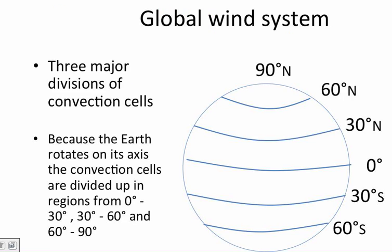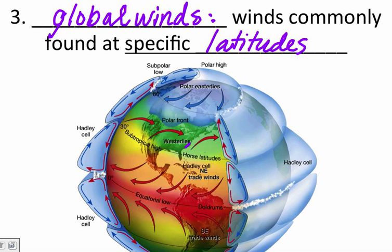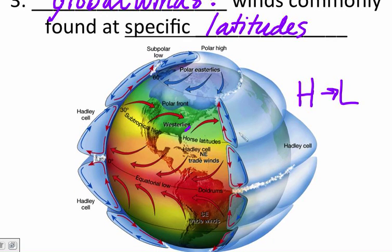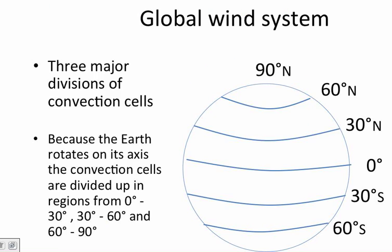We're going to look at three major divisions of convection cells. The Earth is made up of all these different areas of uneven heating to create wind as the air is always moving from high to low pressure. And we end up with six different convection cells. One, two, three above the equator. Four, five, six below the equator. We'll see that really whatever happens above is the same as happening below. So they'll mirror each other as we talk today.